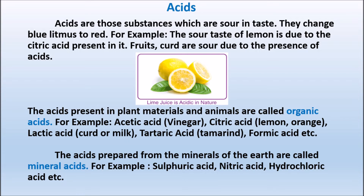The acids prepared from the minerals of the earth are called mineral acids - like sulfuric acid (H2SO4), nitric acid (HNO3), hydrochloric acid (HCl) - all are mineral acids. These are all made from minerals and we prepare them synthetically in industry.